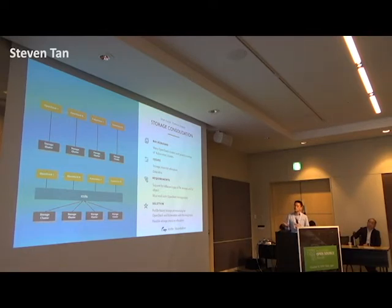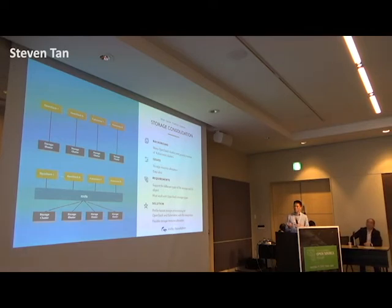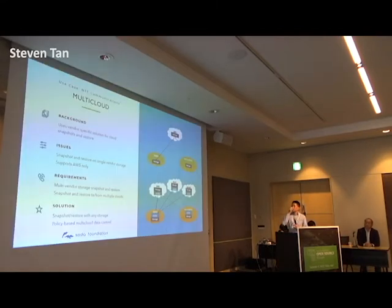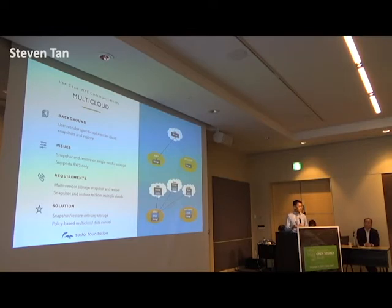What Soda does is consolidate all these different silos into one, so the different OpenStack or Kubernetes clusters can use storage as a unified pool, and resources can be allocated and reallocated very easily. The multi-cloud use case is by NTT Communications. They use AWS — AWS is a partner of NTT Communications — and they developed a cloud controller for AWS to move data between their data center and the AWS cloud, and from AWS to remote sites.